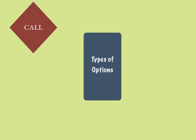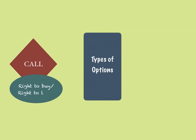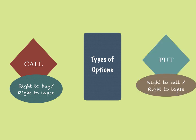The two types of options at the very basic level are call options, which give the buyer the right to buy or right to lapse the contract, and put options, which give the buyer the right to sell or right to lapse the contract. A call option is a right to buy the underlying asset; a put option is a right to sell the underlying asset. The buyer has the rights; the seller has only the obligations.